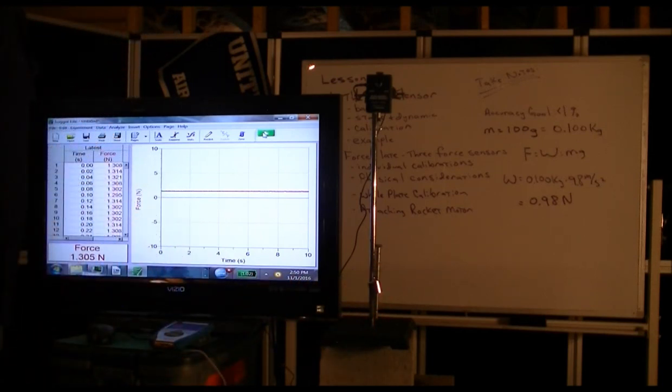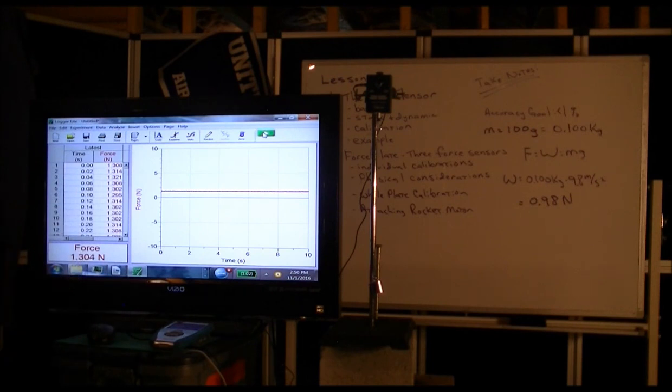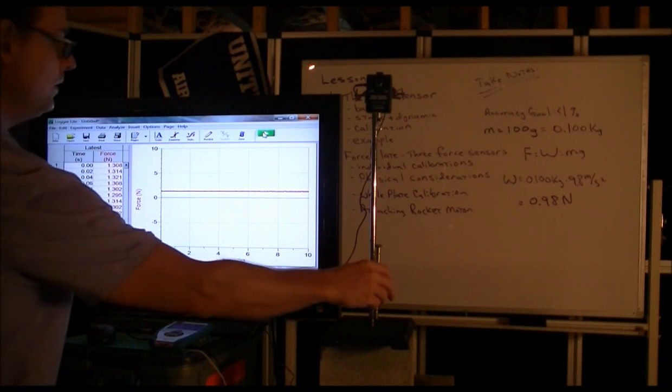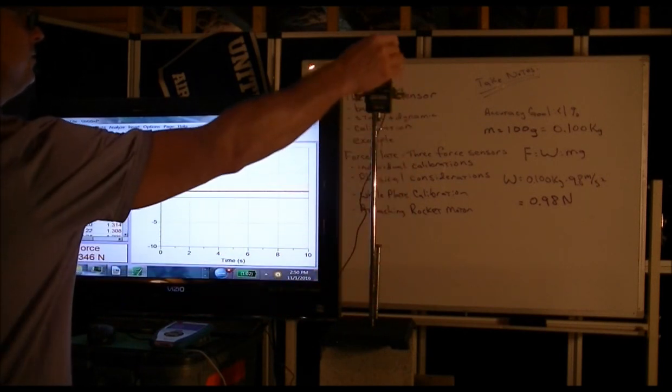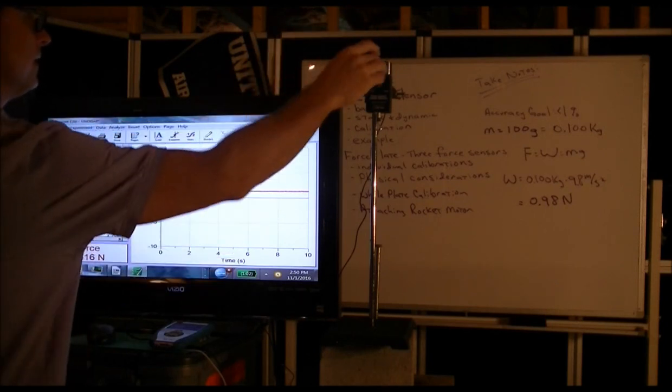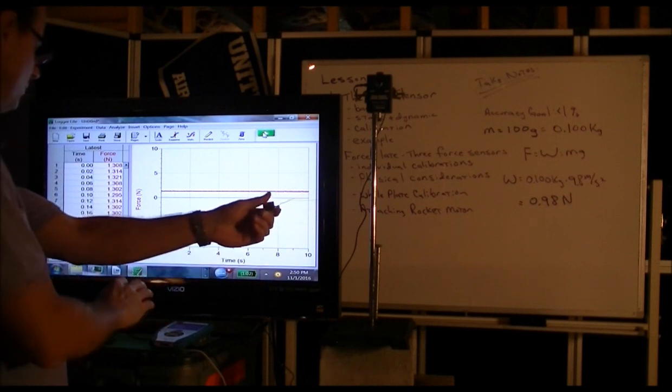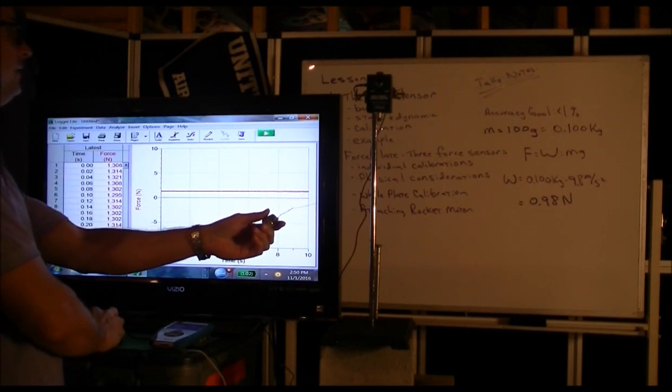But we can fix this if you note that there's a zero button right here. And what pressing the zero button does is it recreates a zero in the weight. So let's just get the hanging weight so that it's no longer exerting a force. Hit the zero button.